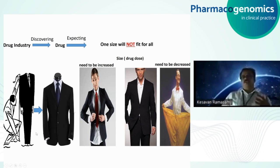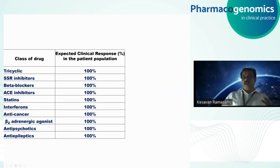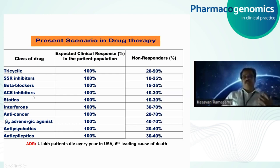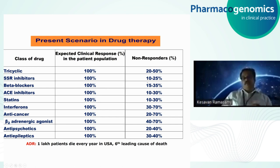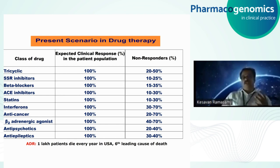If you look at the present scenario of drug therapy, after clinical trials, we expect a drug should produce 100% response in the patient population. But in reality, non-responders are quite high. On top of that, adverse drug reactions are a major problem — one lab patient dies every year due to adverse drug reactions, and it is the sixth-leading cause of death. All this is because we ignore genetic variability.